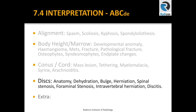That concludes our discussion of conus and cord pathologies. So far we have discussed alignment as A, body height as B, and conus as C. Under alignment we discussed spasm, scoliosis, kyphosis, spondylosis, and spondylolisthesis. Under body height we discussed bony abnormalities such as developmental in origin, hemangiomas, metastasis, fractures, pathological fractures, osteophytes, syndesmophytes, and endplate changes. And then C for conus — we discussed mass lesions, tethering, and myelomalacia.